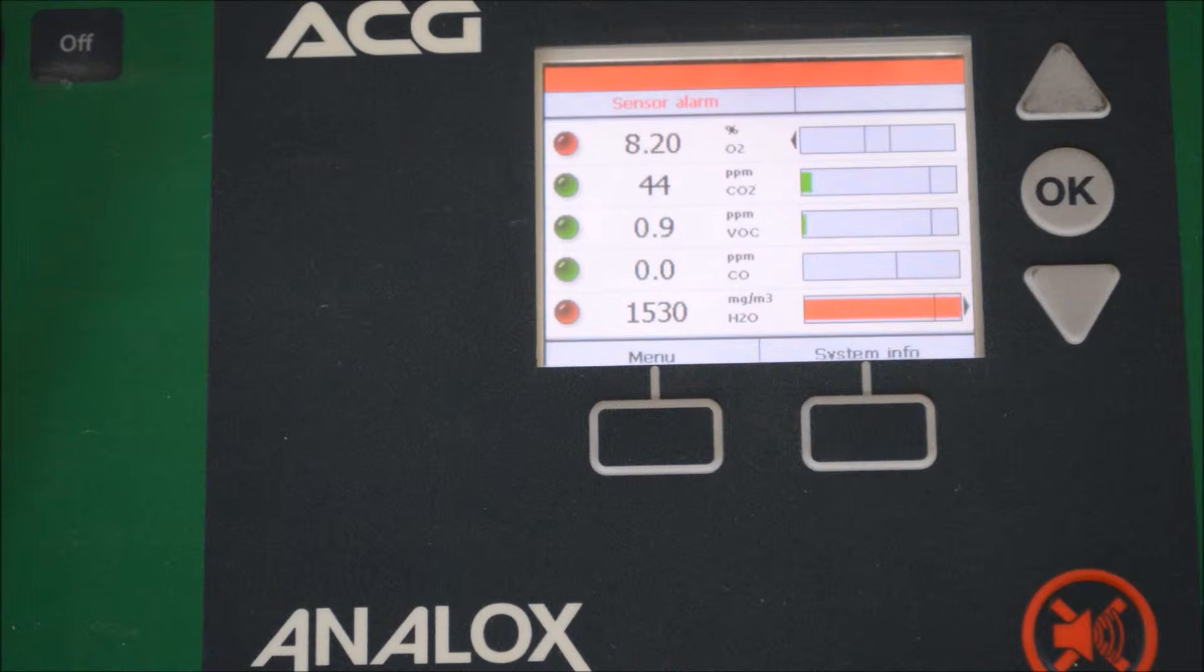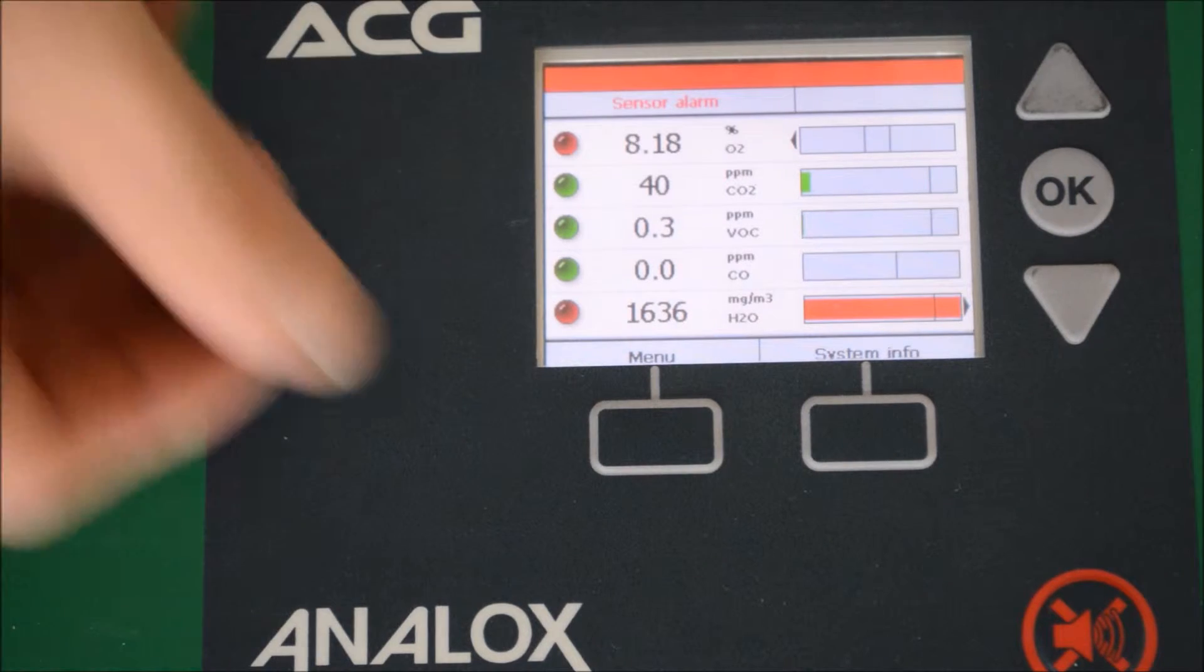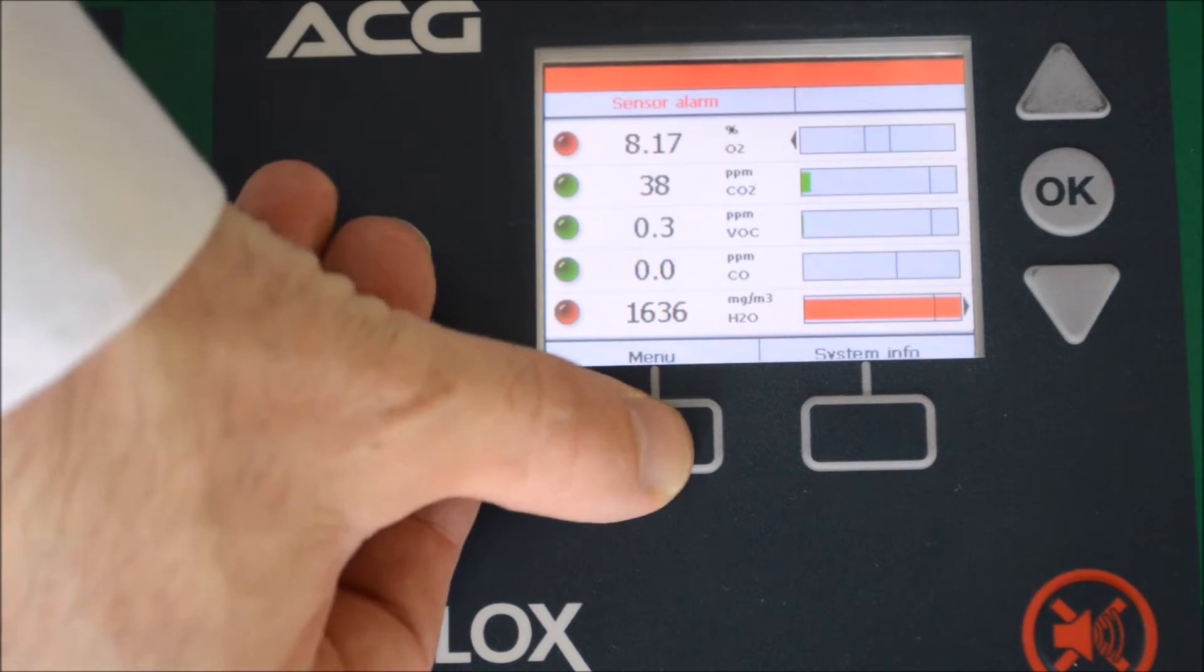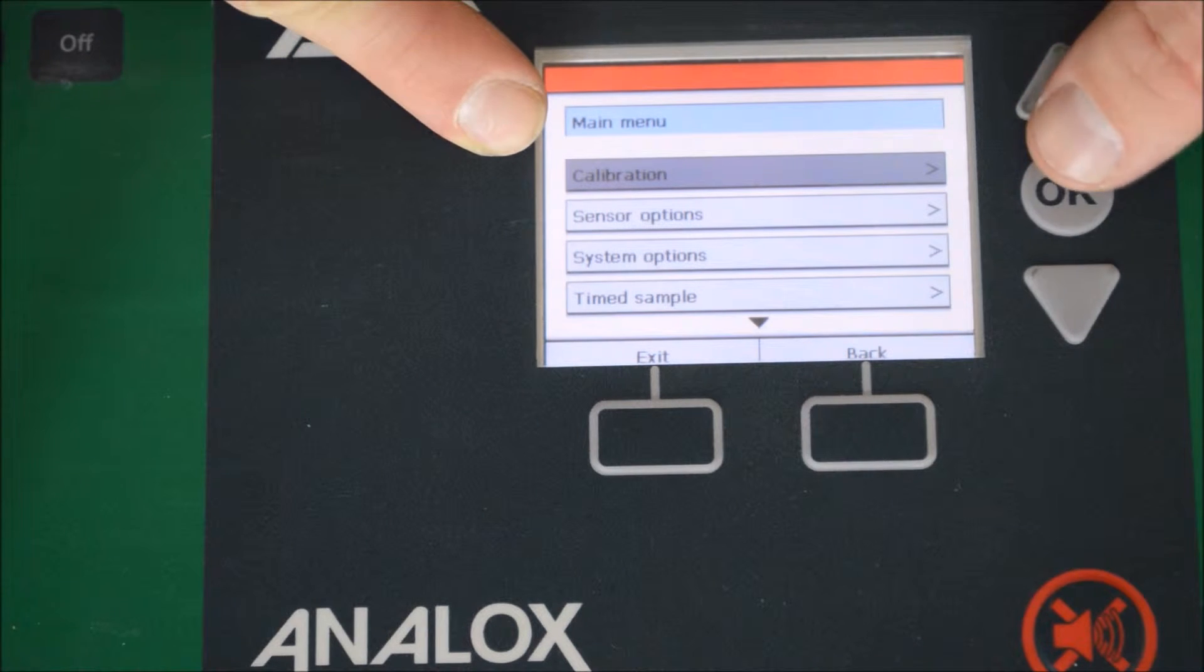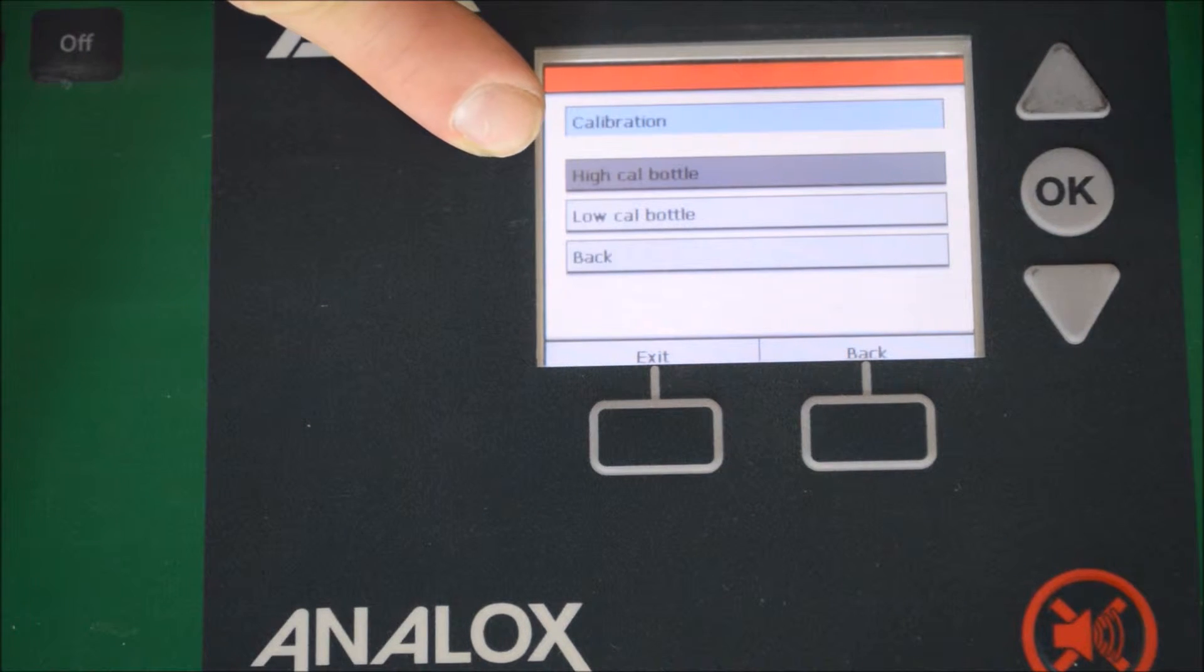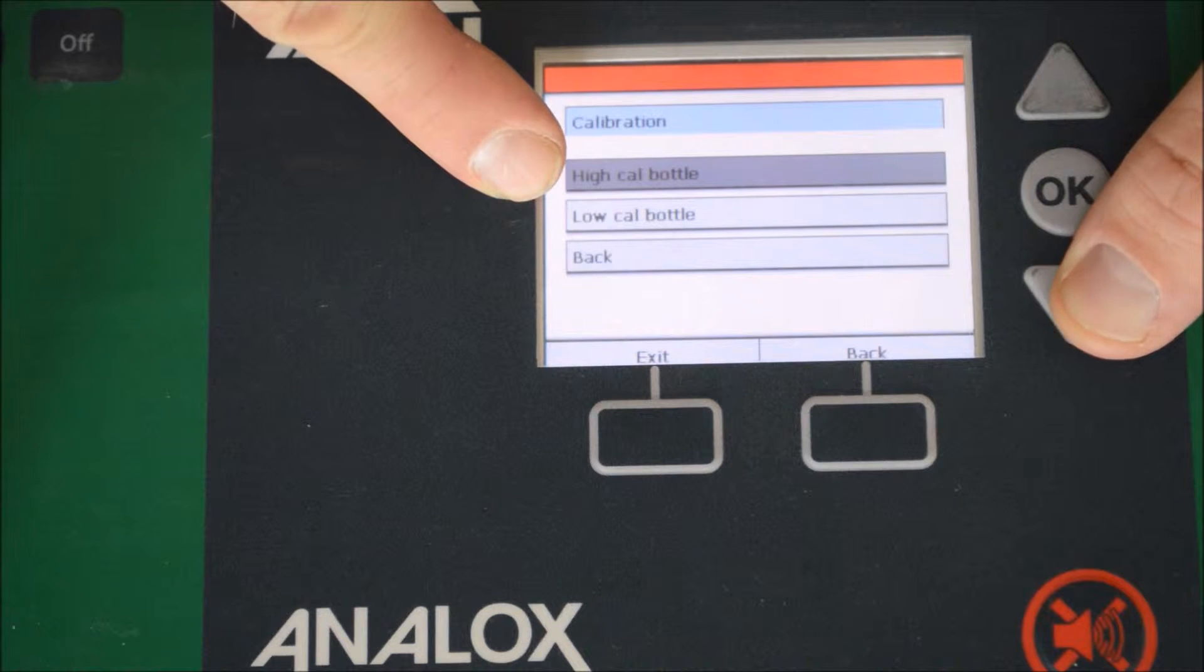We're now carrying out a zero or low calibration gas calibration. Through the menu system, we need to select menu, select calibration, which is the top one, select low calibration bottle, which is the one we've got on.